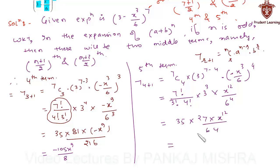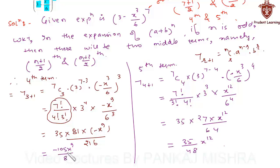This finally gives us 35 upon 48 into x raise to the power of 12. Hence, the two middle terms are minus 105 upon 8 into x to the power of 9, and 35 upon 48 into x to the power of 12. This completes our solution.